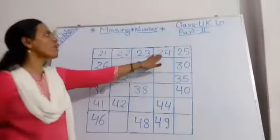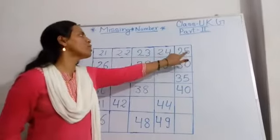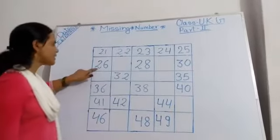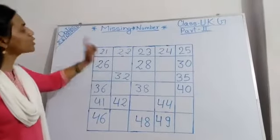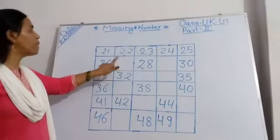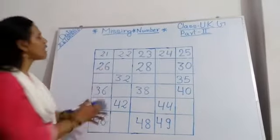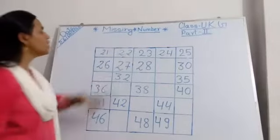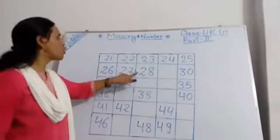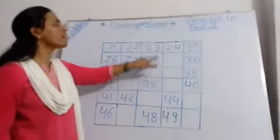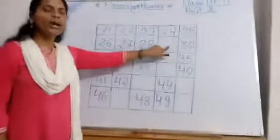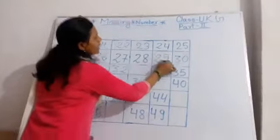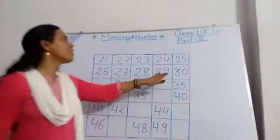24 after 25, 25 after 26, 26 after 27. But 27 is missing, so write down 27. 27 after 28, 28 after 29. 29 is missing, so write down 29.